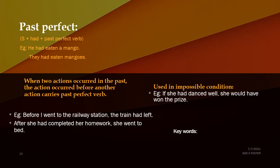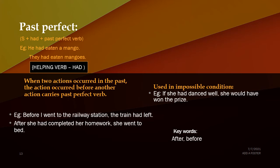Keywords to identify past perfect tense are 'after' and 'before', and the helping verb used in past perfect is 'had'.